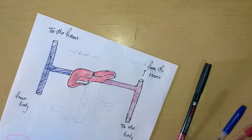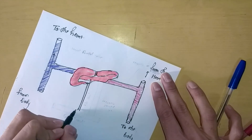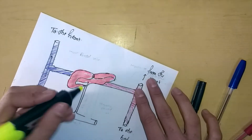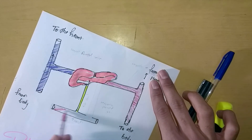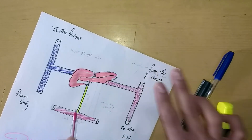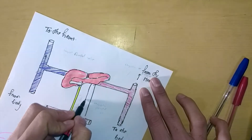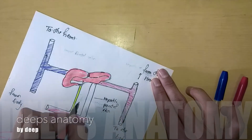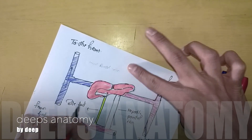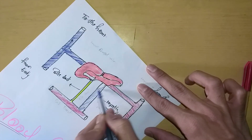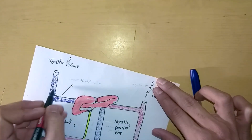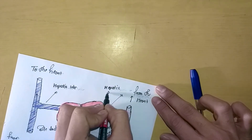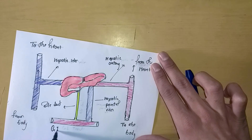From the posterior inferior surface we see the bile duct, which goes to the gastrointestinal tract. The hepatic portal vein carries blood from the gastrointestinal tract, gallbladder, spleen, and pancreas to the liver, which is the largest gland. The hepatic portal vein supplies blood from the spleen and pancreas to the liver.